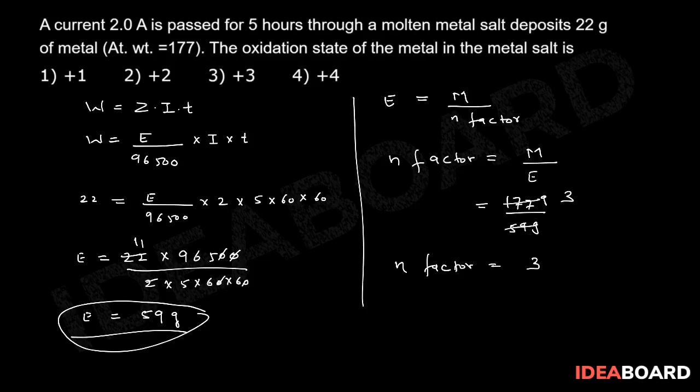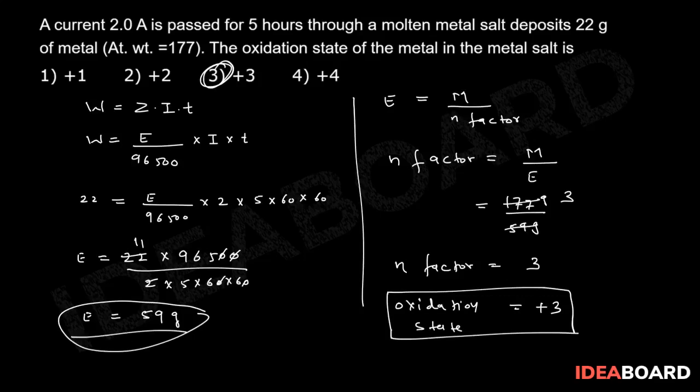So I can say that oxidation state of the metal will be plus 3, because n factor is 3, which is the number of electrons donated by the metal cation or the number of electrons accepted by the anion. So option 3, which says oxidation state is plus 3, is the correct answer.